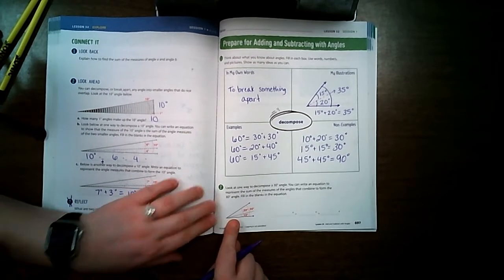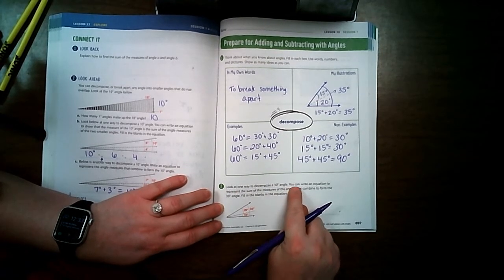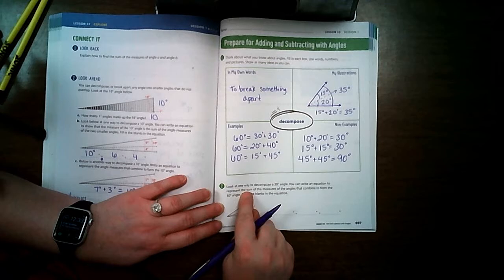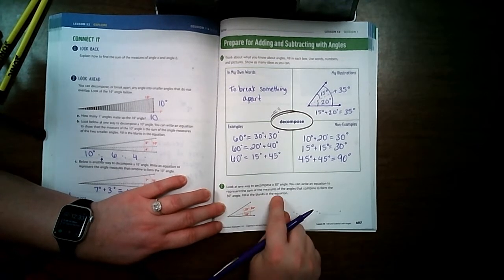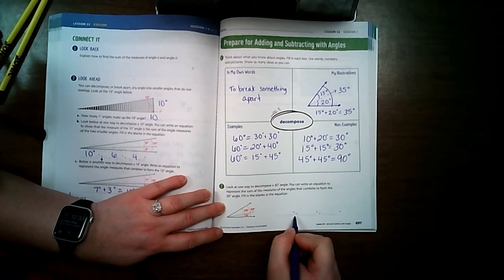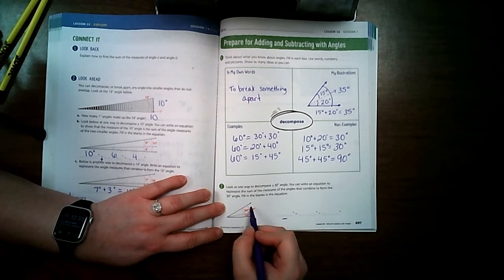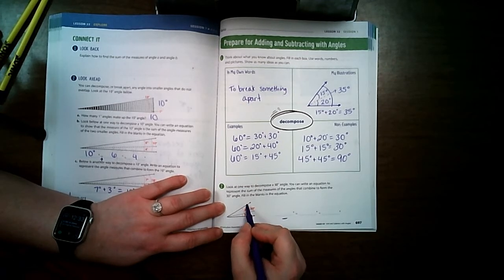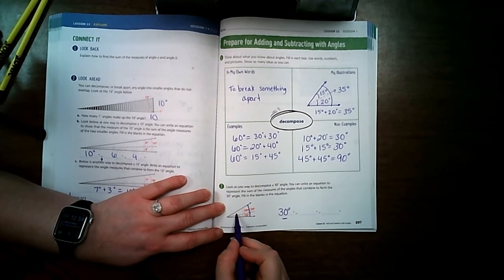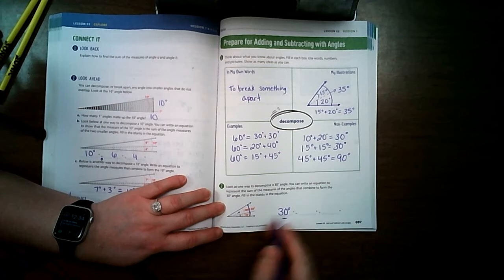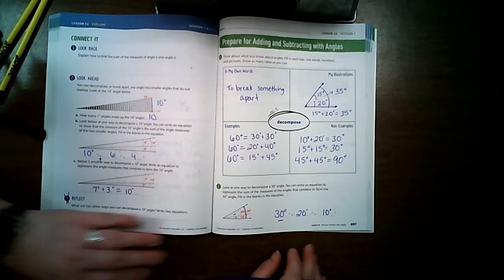Let's take a look at number 2. Look at one way to decompose a 30 degree angle. You can write an equation to represent the sum of the measures of the angles that combine to form the 30 degree angle. Fill in the blanks on the equation. So I see here my equal sign is here. That means I have to put my equal sign at the beginning. Altogether, this outside line right here is 30 degrees. So if I add these two angles together, 20 degrees plus 10 degrees, it equals 30 degrees.